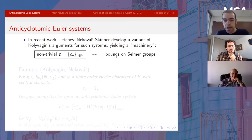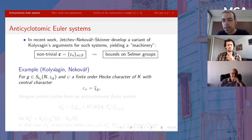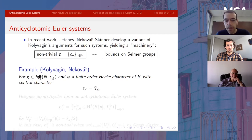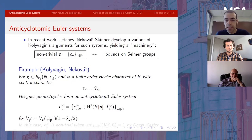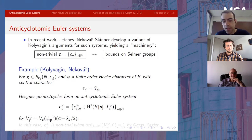The most basic and classical example of such an Euler system comes from Heegner points and more generally cycles, going back to work of Kolyvagin on Kolyvagin points, and Kolyvagin–Logachev and Nekovář in higher dimensional cases. If G is a weight k_G newform with certain nebentypus and a finite character, with the condition on the central character so that the twist is self-dual, then Heegner points and cycles provide one instance of such an anti-cyclotomic Euler system, where the relevant representation is the usual representation attached to G twisted by this character.